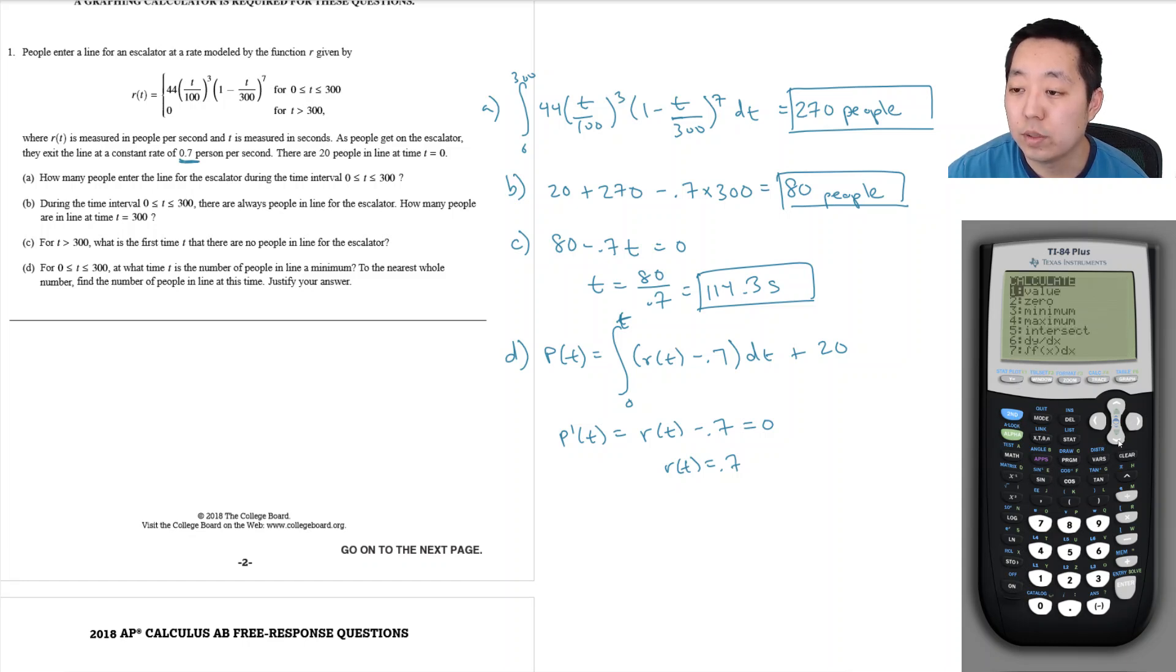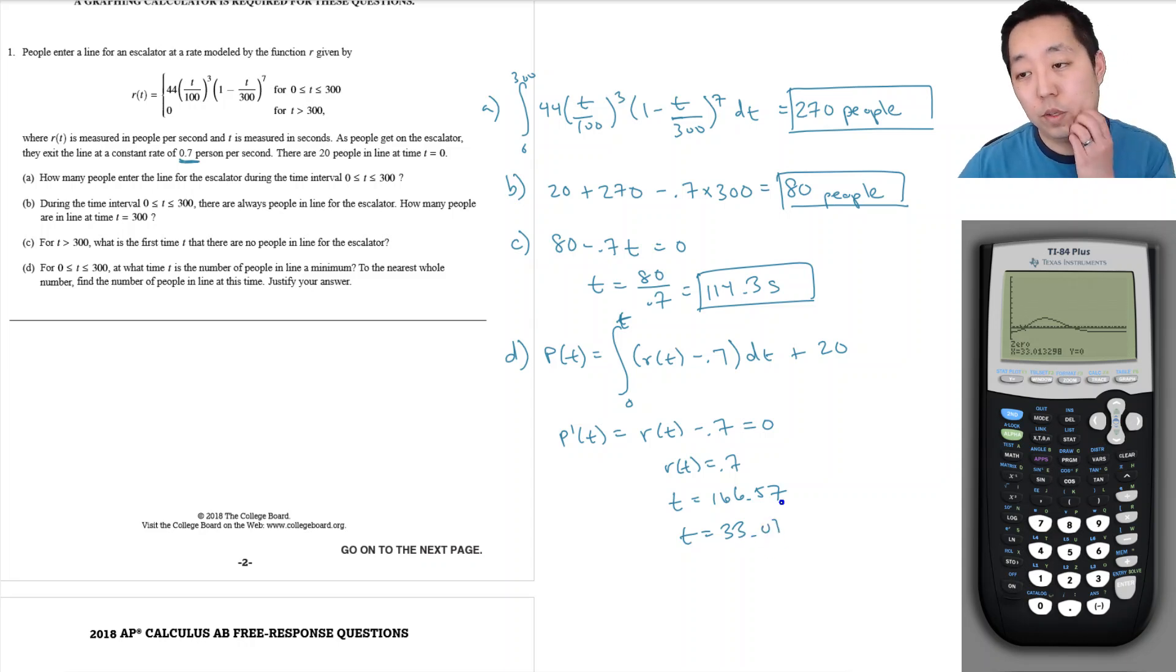I need to know when this is equal to 0. I'll calculate the zeros: left and right bound and then guess. We have here t equals 166.57, and we also have another zero at t equals 33.01.